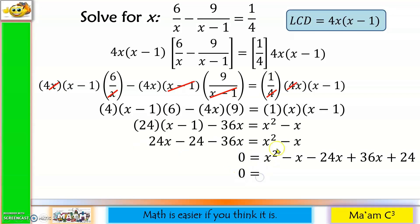So 0 equals we still have x squared. Negative x minus 24x is negative 25x plus 36x is positive 11x. Copy plus 24. So 0 equals, we have a trinomial here. It seems factorable. The factors are x plus 3 and x plus 8.